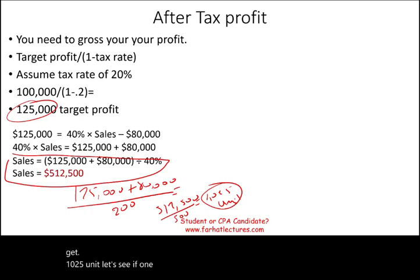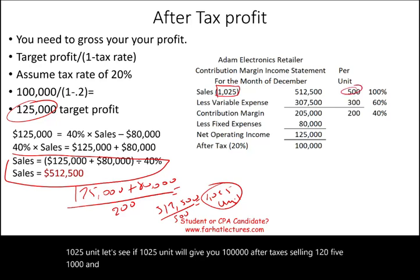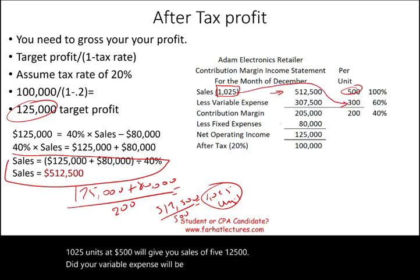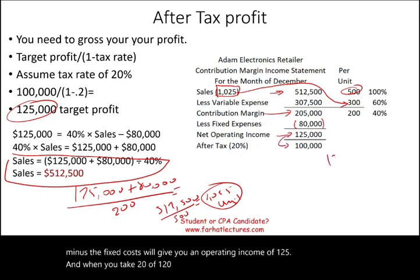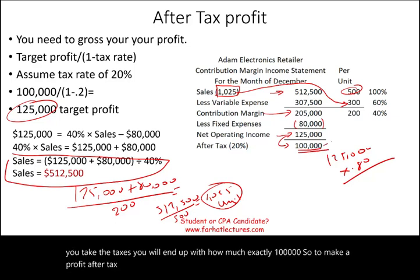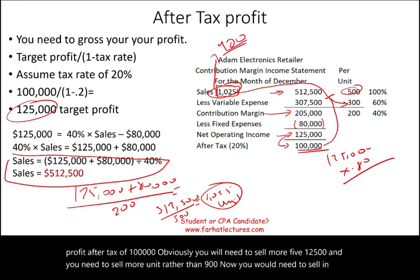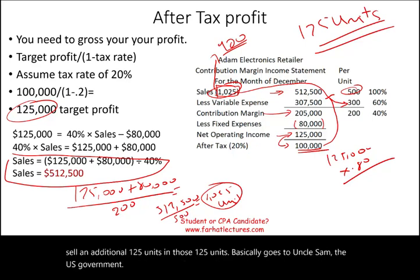Let's verify: selling 1,025 units at $500 gives sales of $512,500. Variable expense: 1,025 × $300 = $307,500. Contribution margin: $205,000. Less fixed costs of $80,000 gives net operating income of $125,000. Applying the 20% tax rate, $125,000 × 0.80 = $100,000 after tax. Confirmed. You need to sell 1,025 units — 125 more than before, those extra units essentially covering the tax obligation.